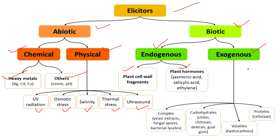Exogenous elicitors could be proteins like cellulase, volatiles like hydrocarbons, carbohydrates like chitin, chitosan, dextrin, and guar gum, as well as complex mixtures like yeast extracts, fungal spores, or bacterial lysates.